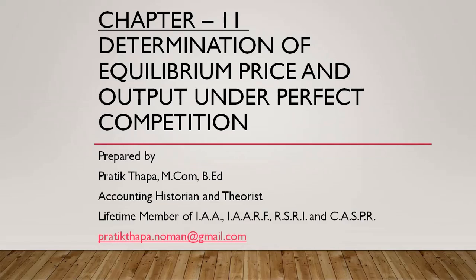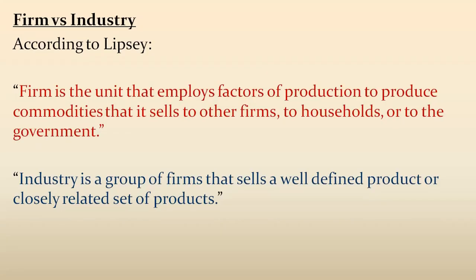Let us start our discussion. As we have already seen the definition of a firm in Chapter 10, according to Lipsey, a firm employs factors of production to produce commodities that it sells to other firms, households, or the government. A firm is an individual unit in the entire economy which employs factors of production to produce different commodities and sells to other firms, households, or the government.